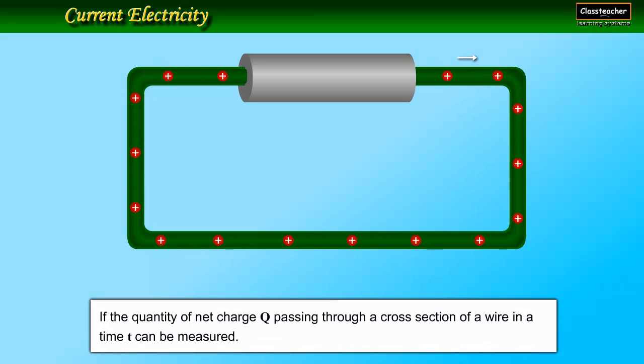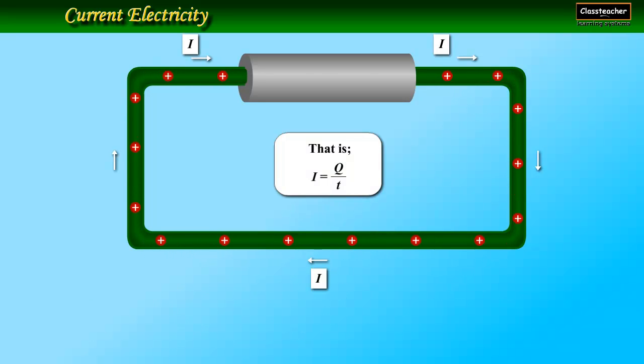If the quantity of net charge Q passing through a cross-section of wire in time T can be measured, that is, I equals Q upon T, where I is the steady current flowing through the wire.